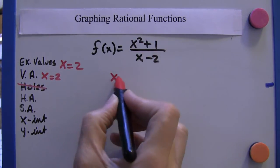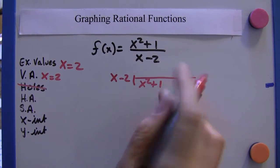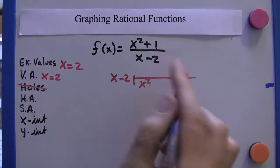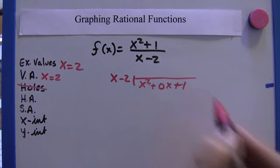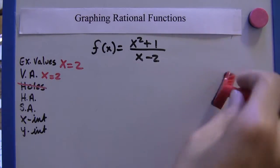We could do long division. Well, we need to fill in some blanks there. We need to have some placeholders: zero x plus one. We could do long division. I'm not going to do it that way. I'm going to do synthetic division here.